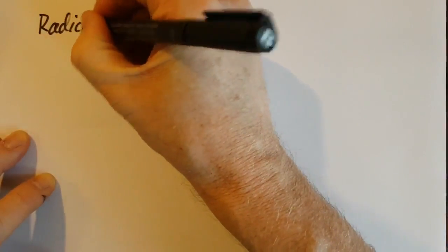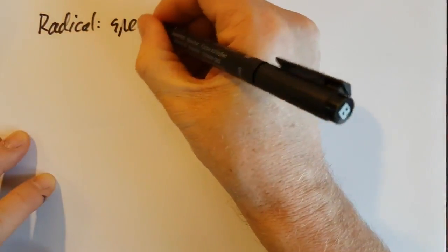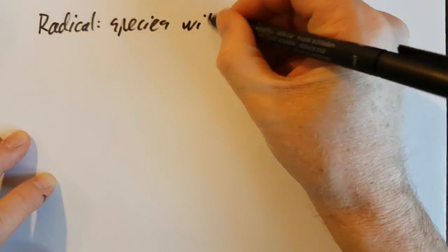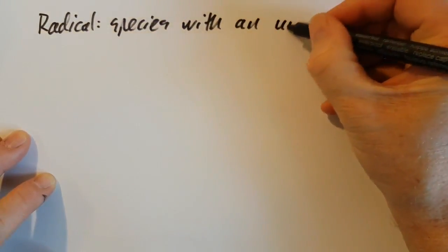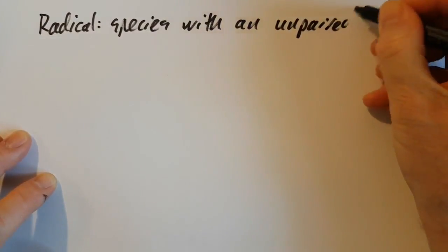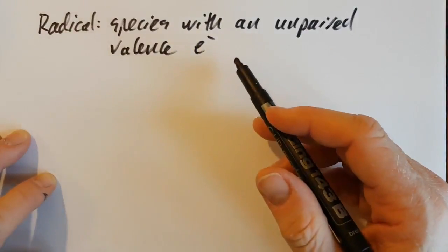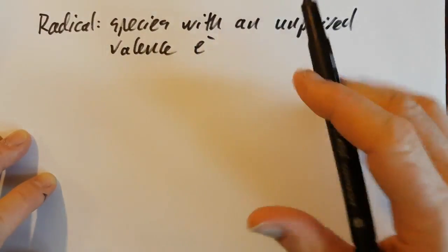So a radical—well, that's a species, and that could be an atom, ion, or molecule with an unpaired valence electron. Electrons like to go around in pairs, and if there's a single electron, it's going to want to grab an electron from somewhere else. It's going to act like an oxidizing agent.